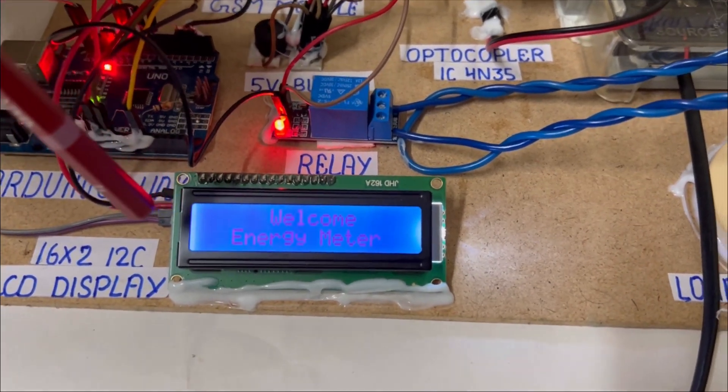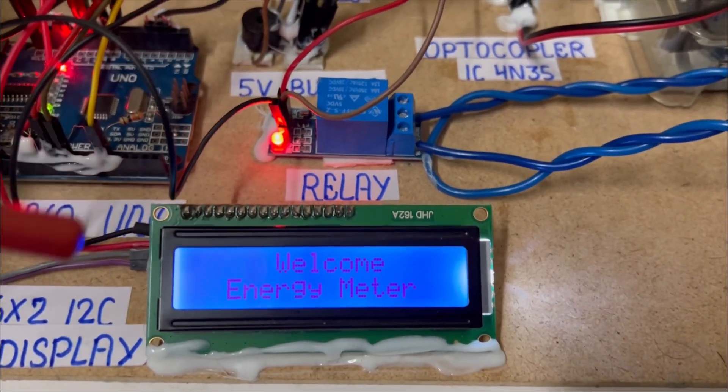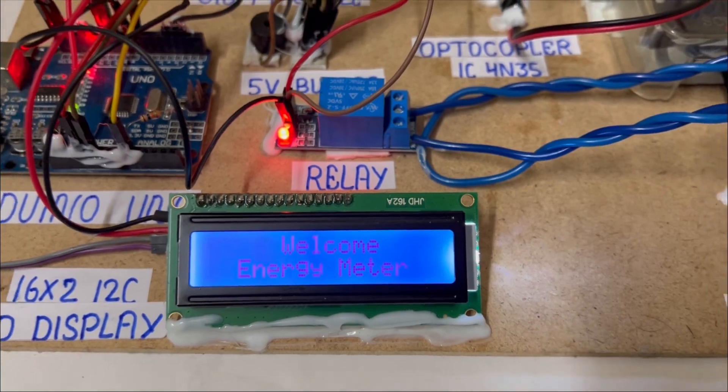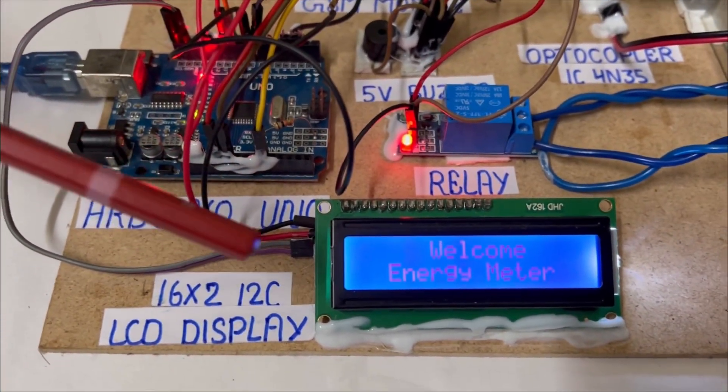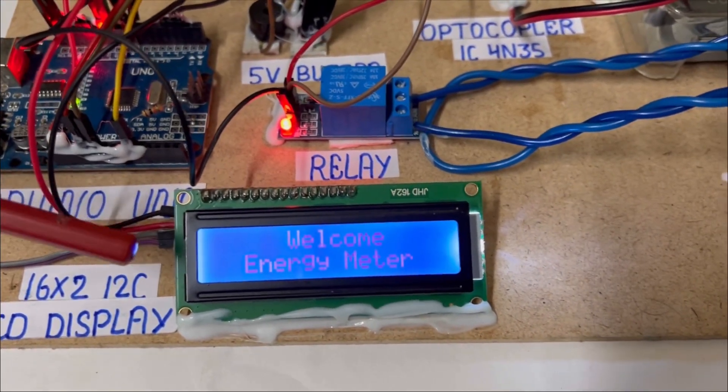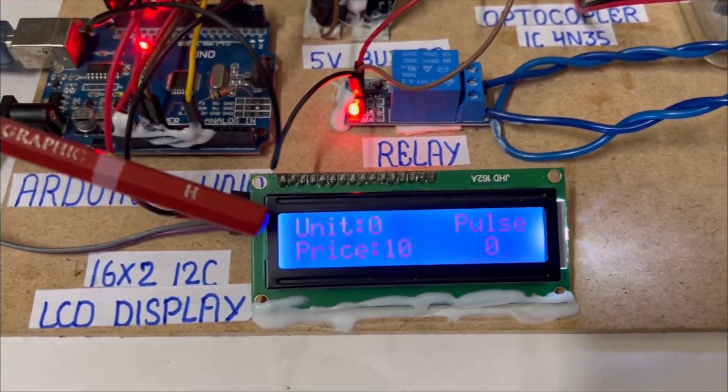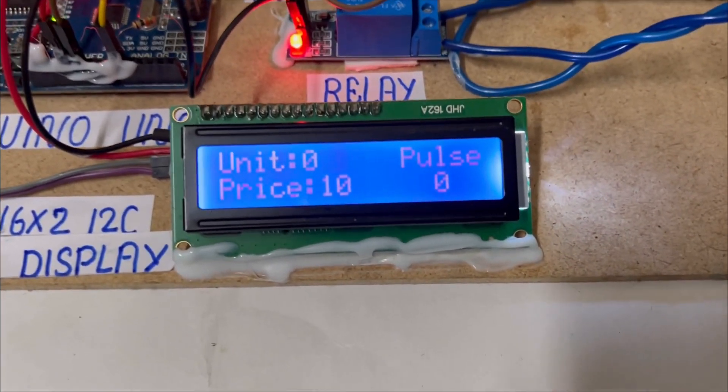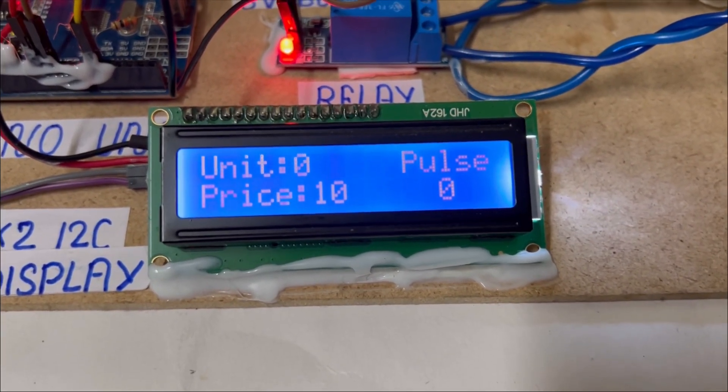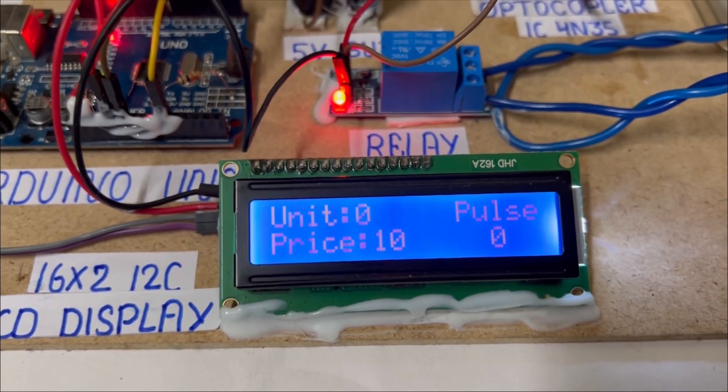As you can see, I have given the power supply here, and you can see it is written 'Welcome Energy Meter.' You will see the pulse amount and the price amount within a few seconds. Here you can see that unit is zero, price is 10, and pulse is zero as we have not recharged any amount. Now it won't show any results, so we are going to do recharge and after that I will show you the result.